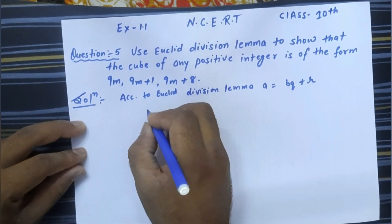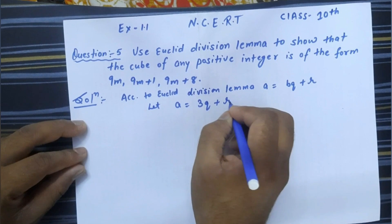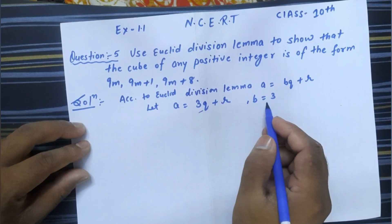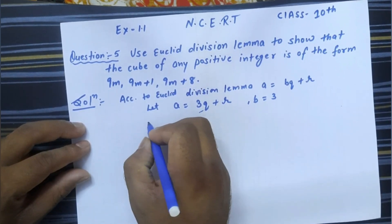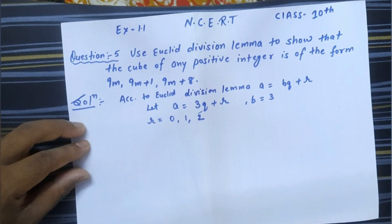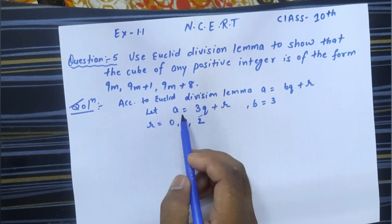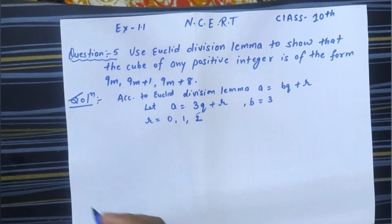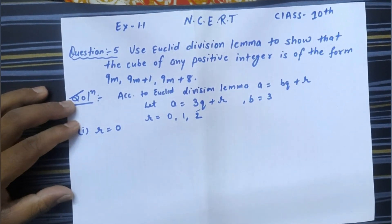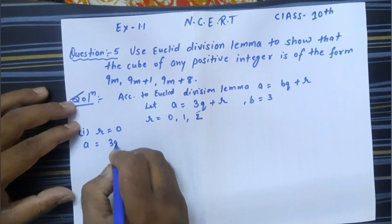For this, we assume: let a = 3q + r, where b = 3. If the divisor is 3 and we are dividing any integer, the possible values of remainders are 0, 1, and 2. Now we will take different values of the remainder, cube 'a', and see what form we get. First case: when the remainder is 0.